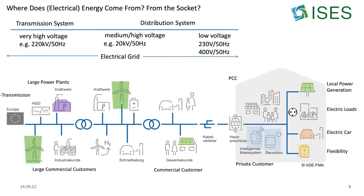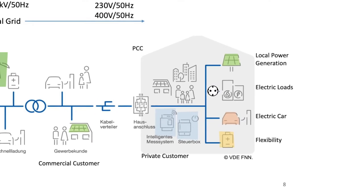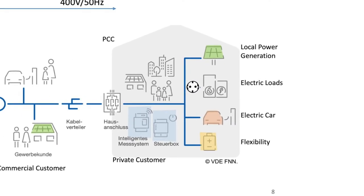Let's start on the right side where we have our house — that's where we live — and here in the house we have a socket, and in the socket we can plug in our electric loads: electric loads like a television, washing machine, light bulb, and whatever. The question is: where does the energy consumed by the light bulb or the other devices come from?